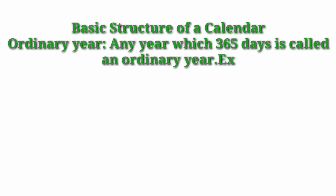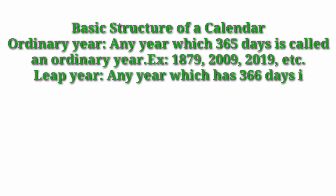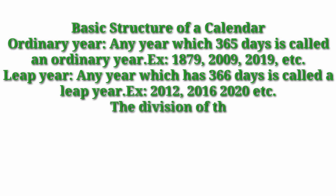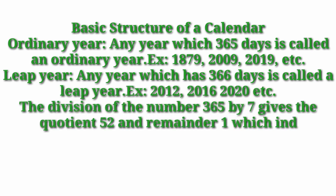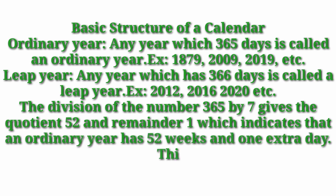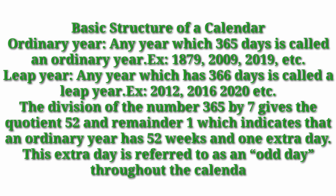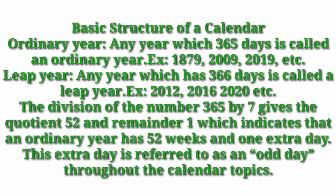Basic structure of calendar: an ordinary year is any year which has 365 days. Examples: 1879, 2009, 2019, etc. A leap year is any year which has 366 days. Examples: 2012, 2016, 2000, etc. The division of 365 by 7 gives quotient 52 and remainder 1, which indicates that an ordinary year has 52 weeks and one extra day. This extra day is referred to as an odd day throughout the calendar topic.